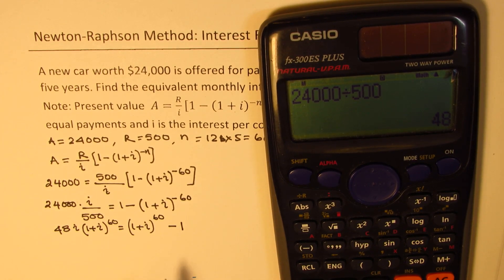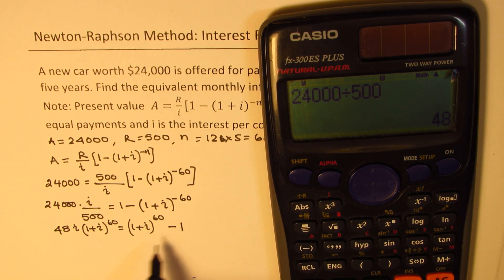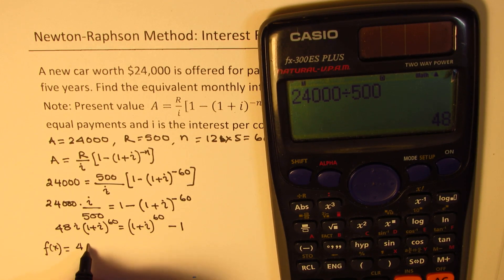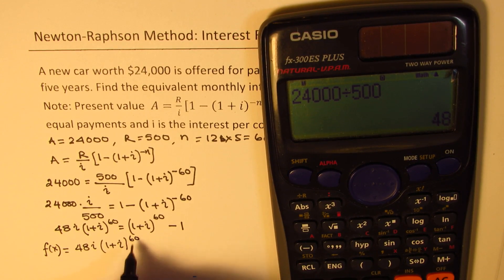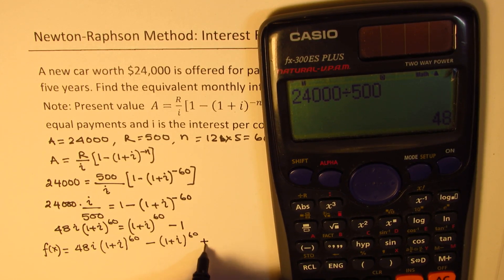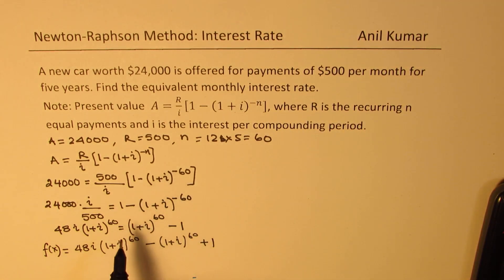Bringing all terms together, we define our function f(I) as: 48I times (1 plus I)^60 minus (1 plus I)^60 plus 1. This is the function we will use with Newton-Raphson's method.